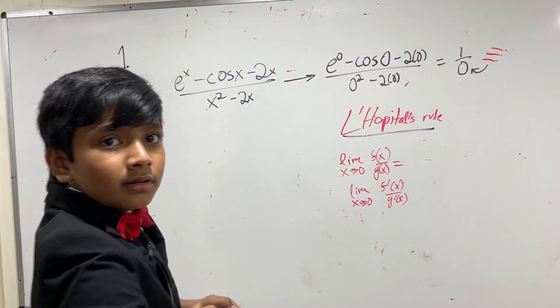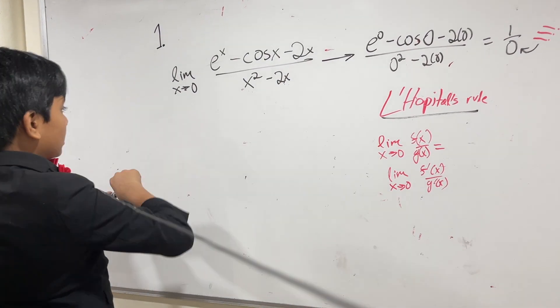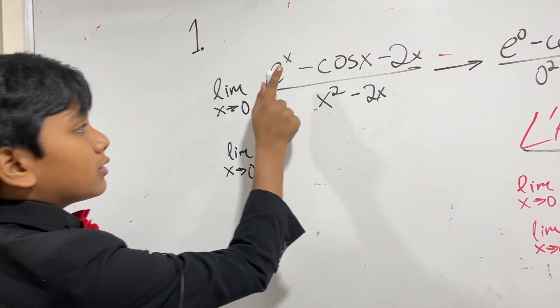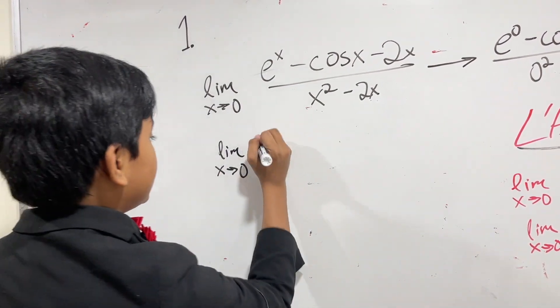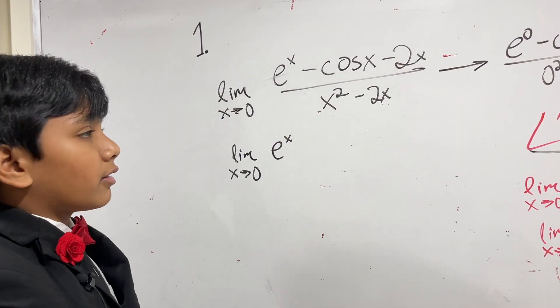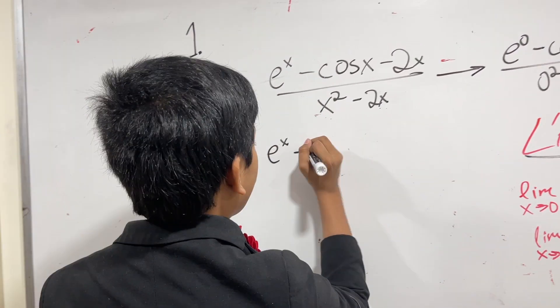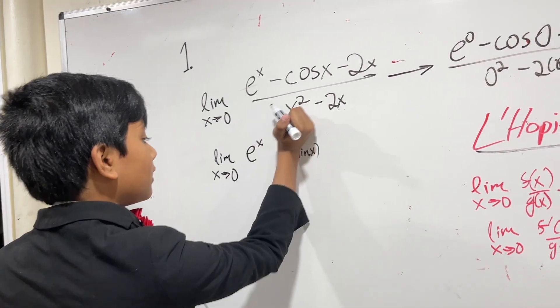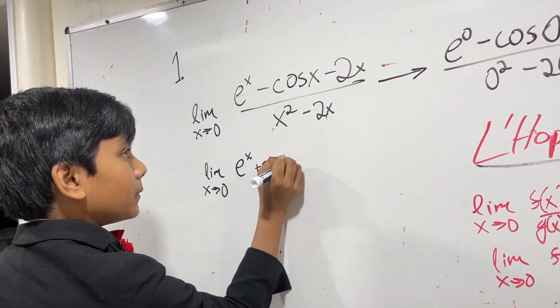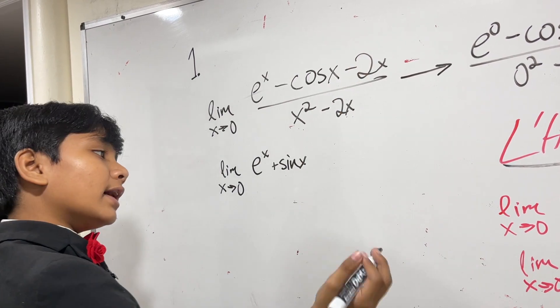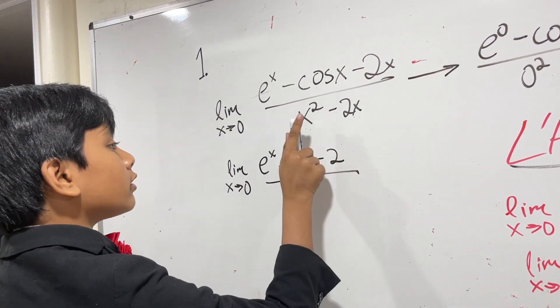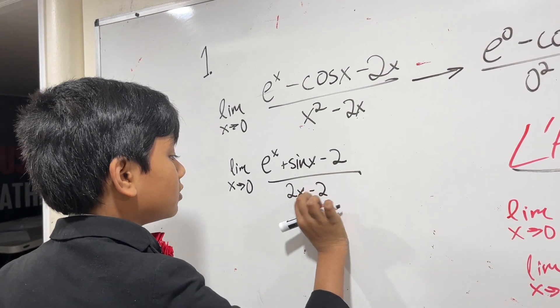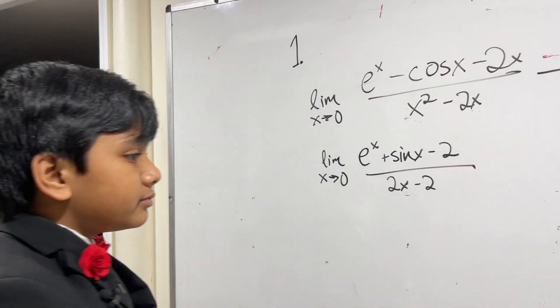So let's do that. That means we get the limit as x approaches zero of: the derivative of e^x is e^x, the derivative of minus cosine x is minus negative sine x, or in other words plus sine x, and taking the derivative of minus 2x yields minus 2, over the derivative of x squared which is 2x minus the derivative of 2x which is 2.